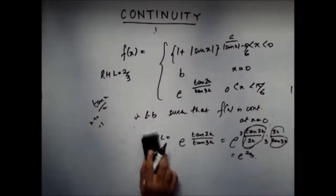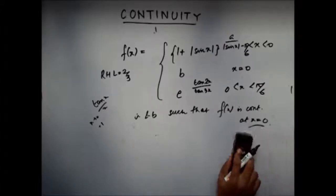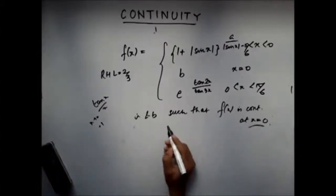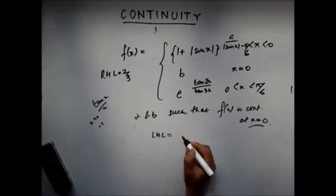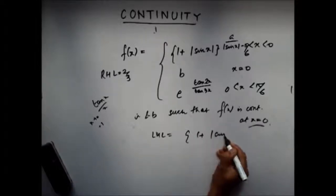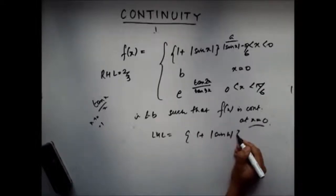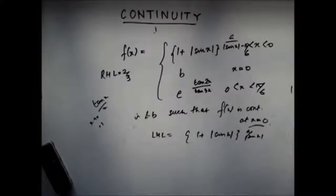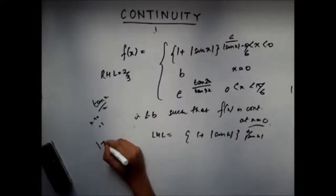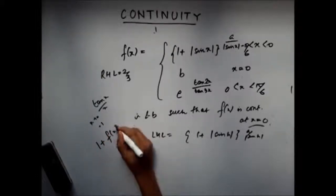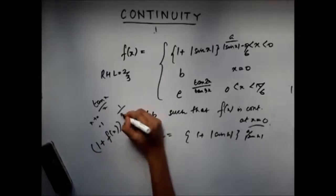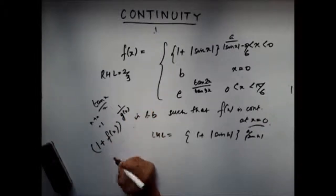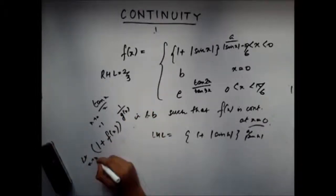Now, let's see what the left-hand limit is equal to. The left-hand limit is 1 plus |sin h|^a / |sin h|. You know that if you have a function (1 + f)^(1/g), limit as x approaches 0...